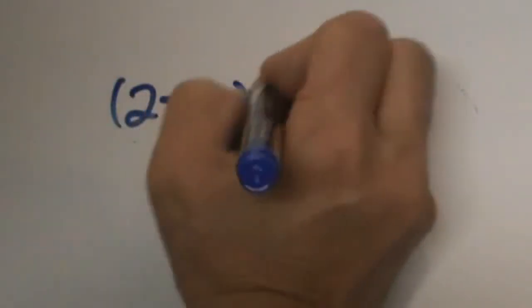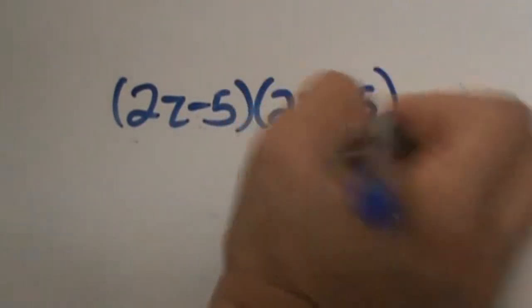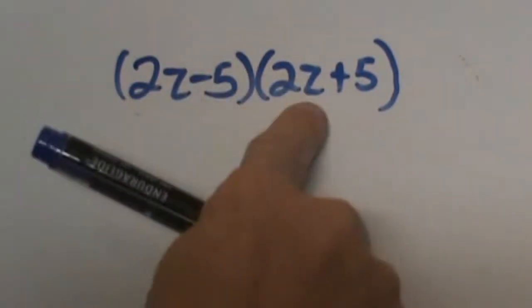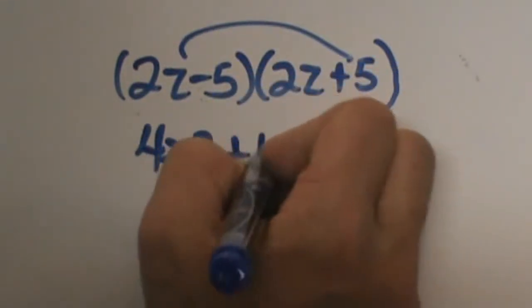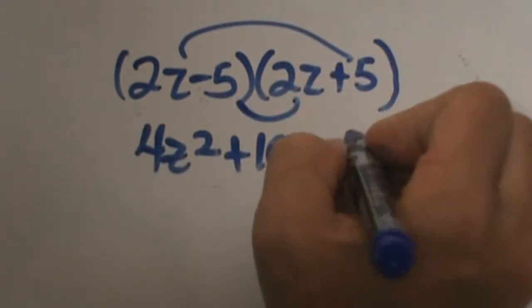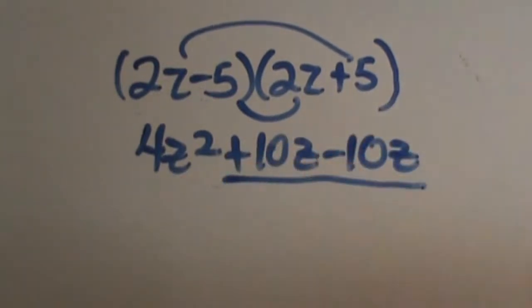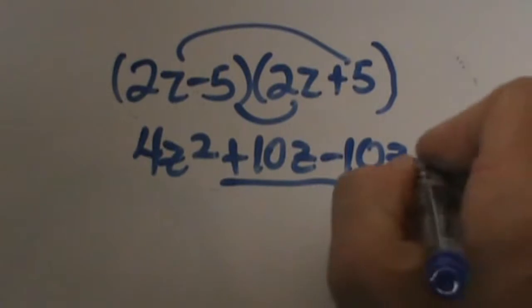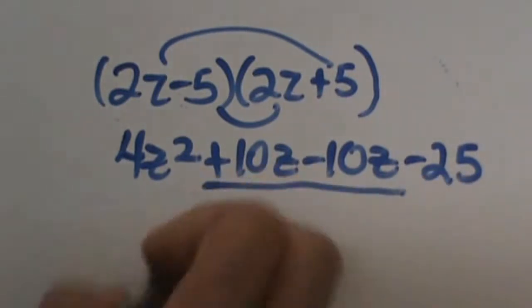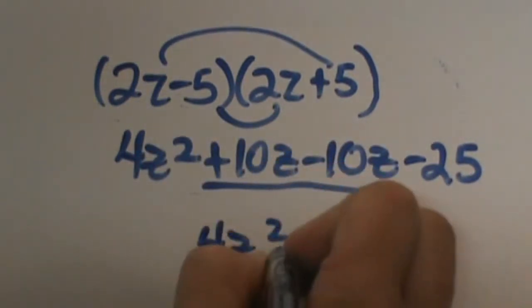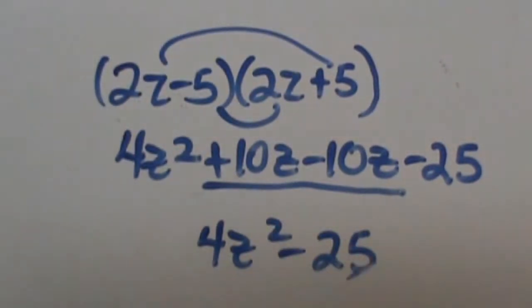Let's look at 2x minus 5 times 2x plus 5 and see what happens with it. First we are going to have 2z times 2z which is 4z squared. Outer we are going to have plus 10z. Inner we are going to have minus 10z — we can already see that is going to be gone. And negative 5 times positive 5 is negative 25. Just be very careful with this sign back here.